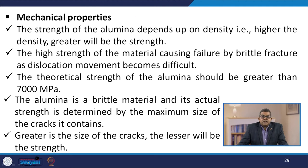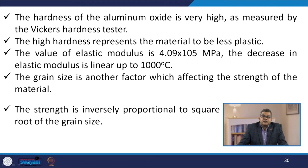The mechanical properties: strength of alumina depends on density — higher density gives greater strength. High strength causes failure by brittle fracture as dislocation movement becomes difficult. The theoretical strength should be greater than 7000 MPa. Actual strength is determined by the maximum size of cracks. Hardness is very high as measured by the Vickers hardness tester, and the material is less plastic. Elastic modulus is around 4.09 × 10⁵ MPa, decreasing linearly up to 1000°C. Strength is inversely proportional to the square root of grain size.